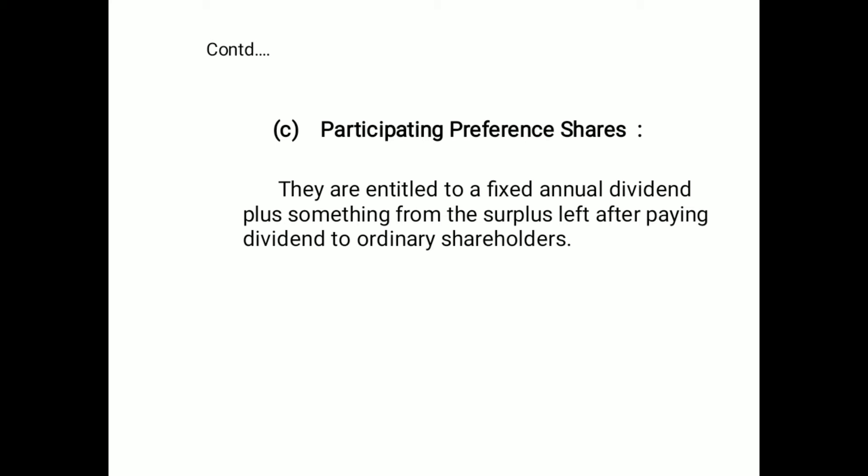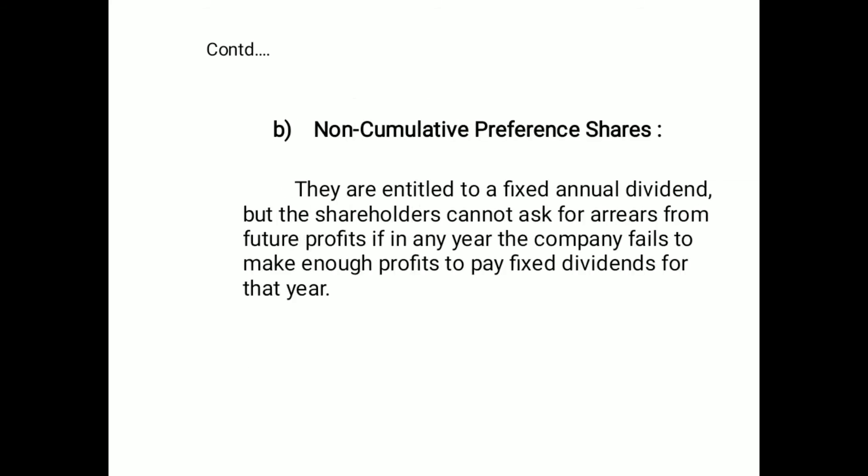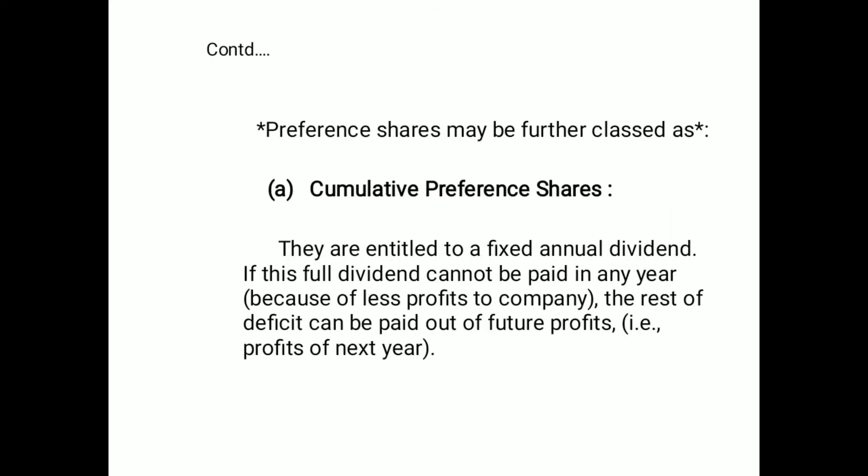The third type is participating preference shares. They are entitled to a fixed annual dividend plus a share of the surplus left after paying dividends to ordinary shareholders. These are the main types of preference shares.